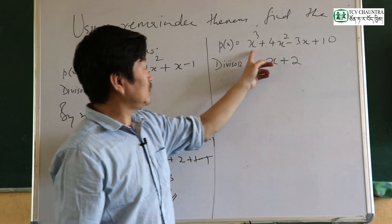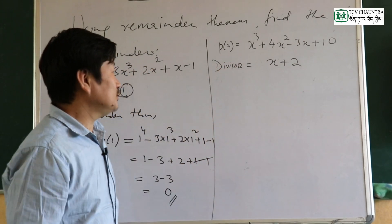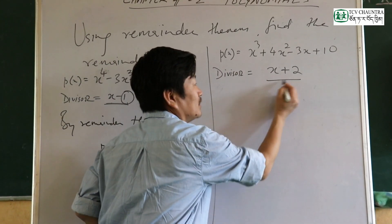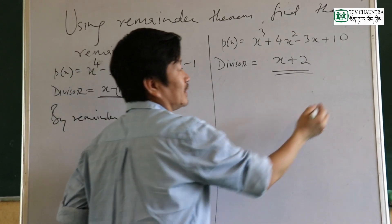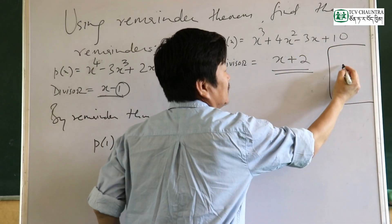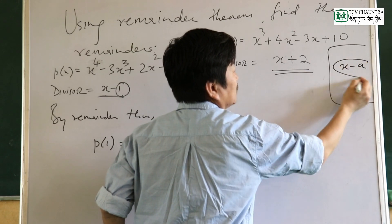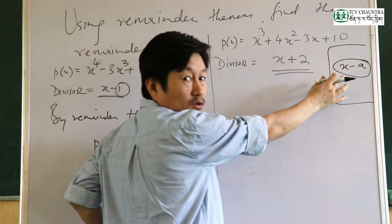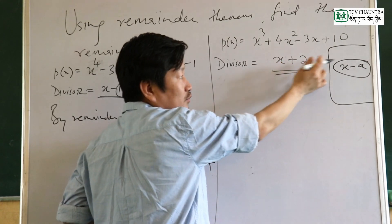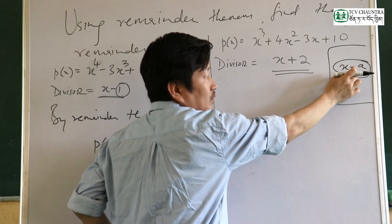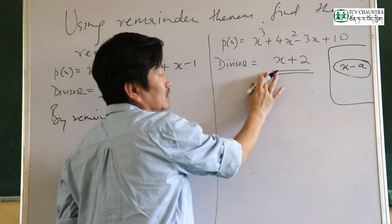When making a polynomial divisor, you need to identify the divisor. If the divisor is given, you need to say it is a linear polynomial of x minus a form. Here the divisor is given in the form x plus 2, which equals x minus negative 2, so a equals negative 2.